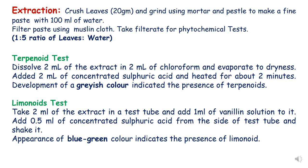For the limonoid test, take 2 ml of extract in a test tube, add 1 ml of vanillin solution, then add 0.5 ml of concentrated sulfuric acid from the sides of the test tube, and shake it. Appearance of blue-green color indicates the presence of limonoids. These are the two tests for terpenoids and limonoids.